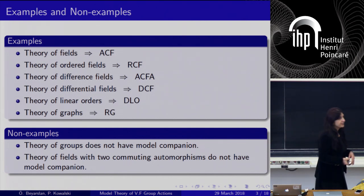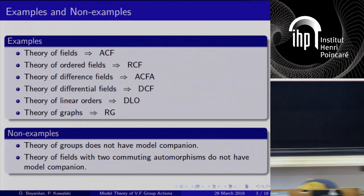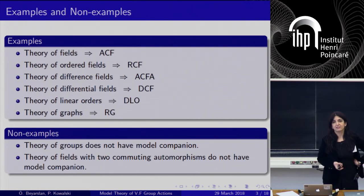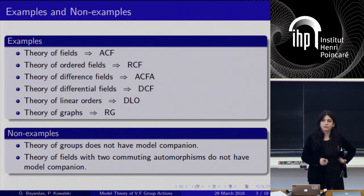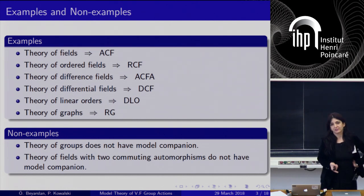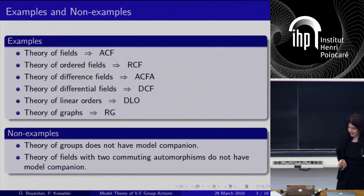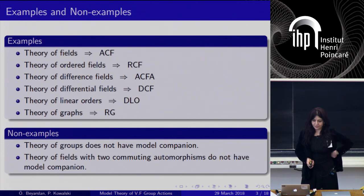These are companionable theories. There are also non-companionable theories. For example, the theory of groups doesn't have a model companion. Also, if you have a field with two commuting automorphisms, it doesn't have a model companion either. I'll come back to these things later when we discuss more about the theory of fields with group action.